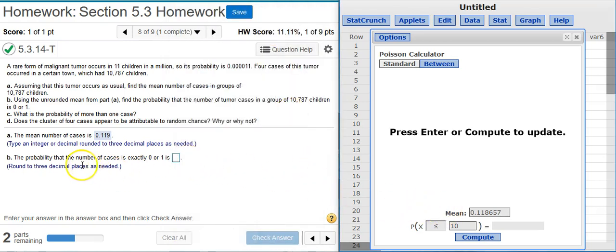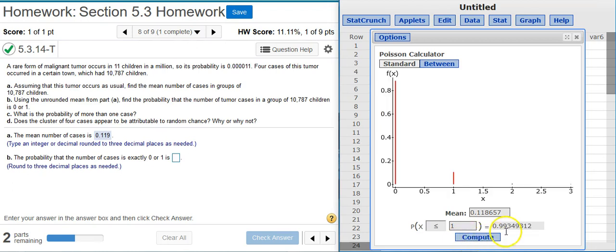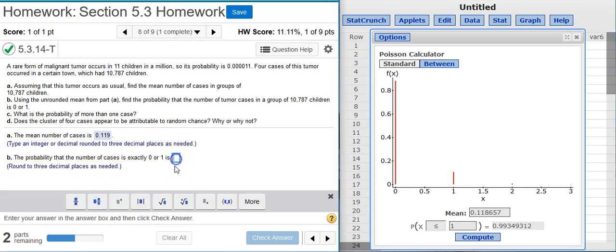Now we want to get the probability the number of cases is exactly zero or one. So that's the same as being one or less, so less than or equal to one. That gives me 99%, so round to three decimal places, put that in here.